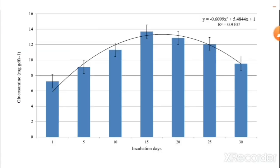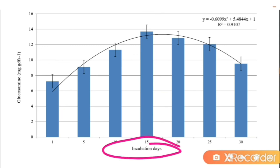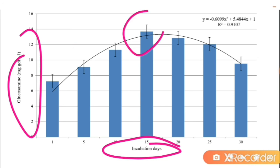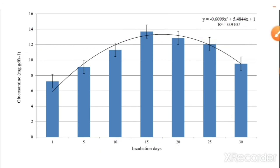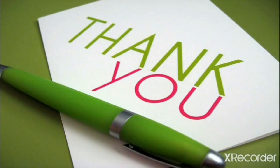On the graph of incubation period versus glucosamine content (mg/g), we can observe that the highest glucosamine content was found at 15 days of incubation, with an R² value of 0.9107. This is all about the biomass determination of endophytic fungi, which helps us to identify and reveal the physiology of endophytic fungi. Thank you.